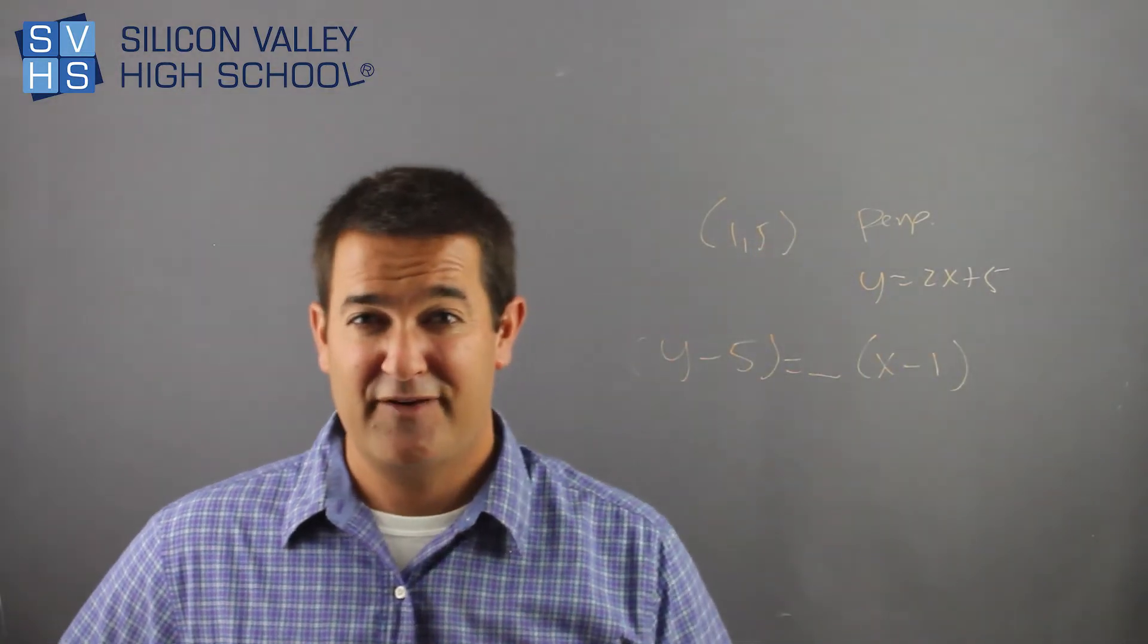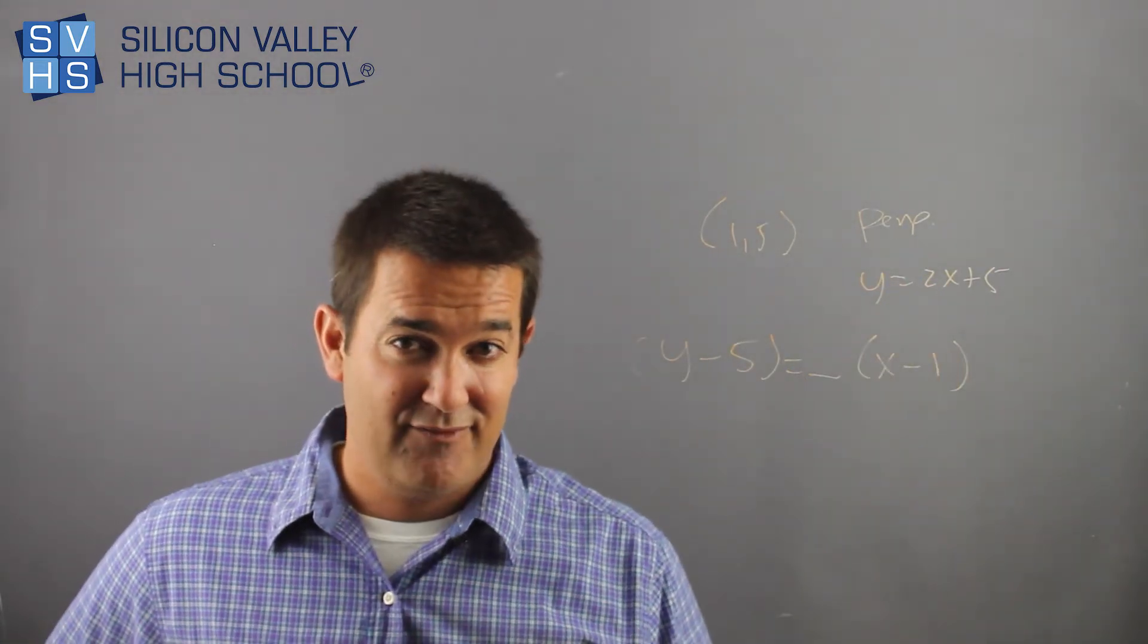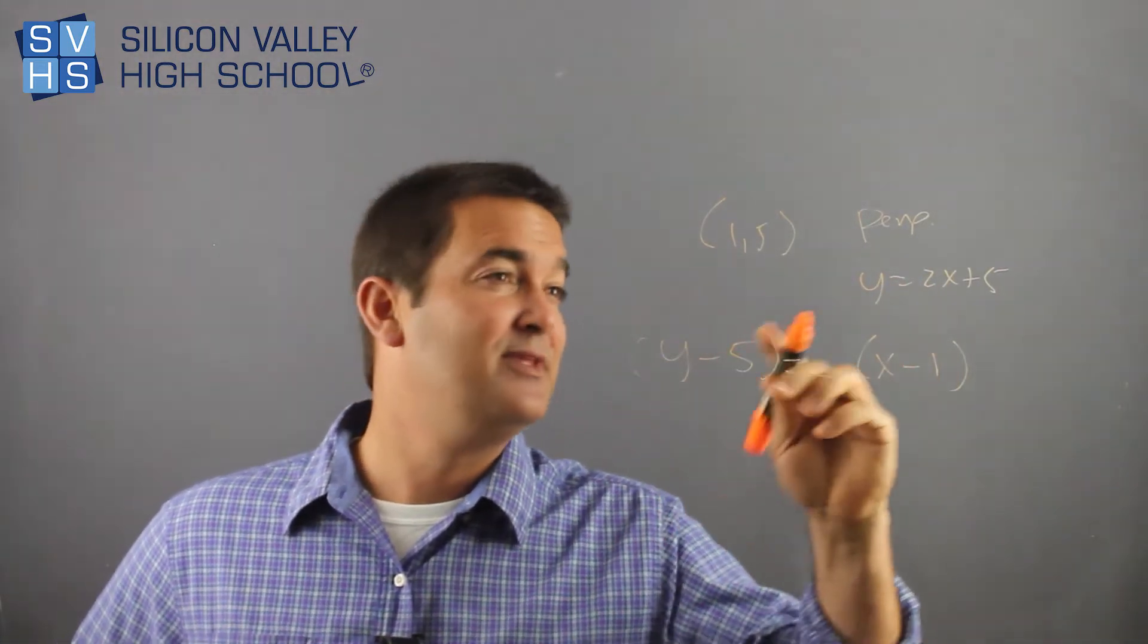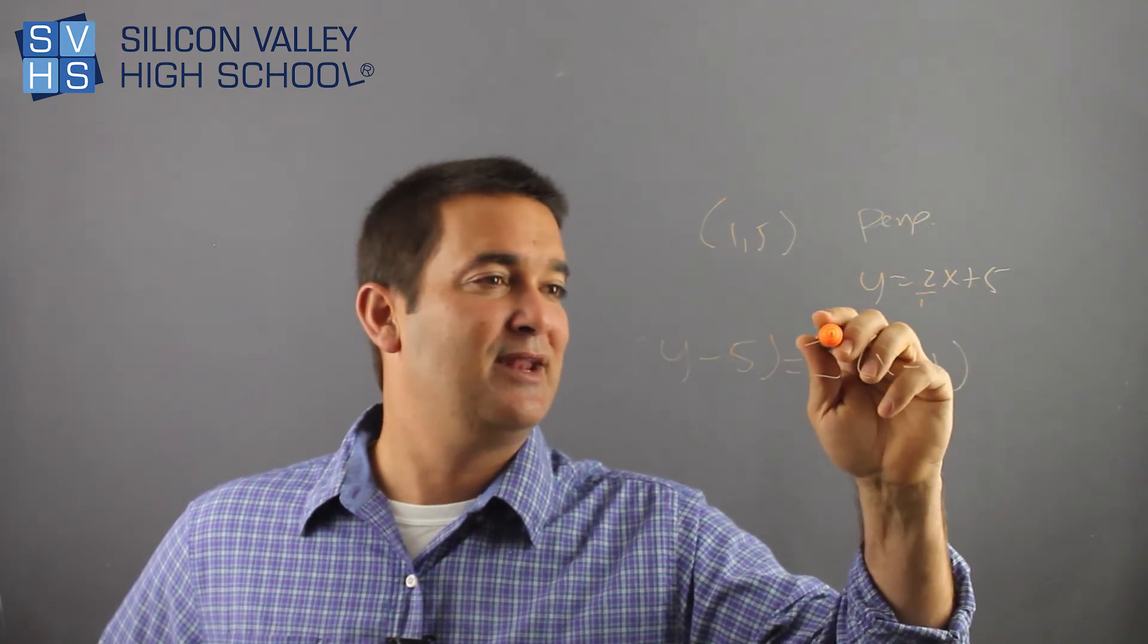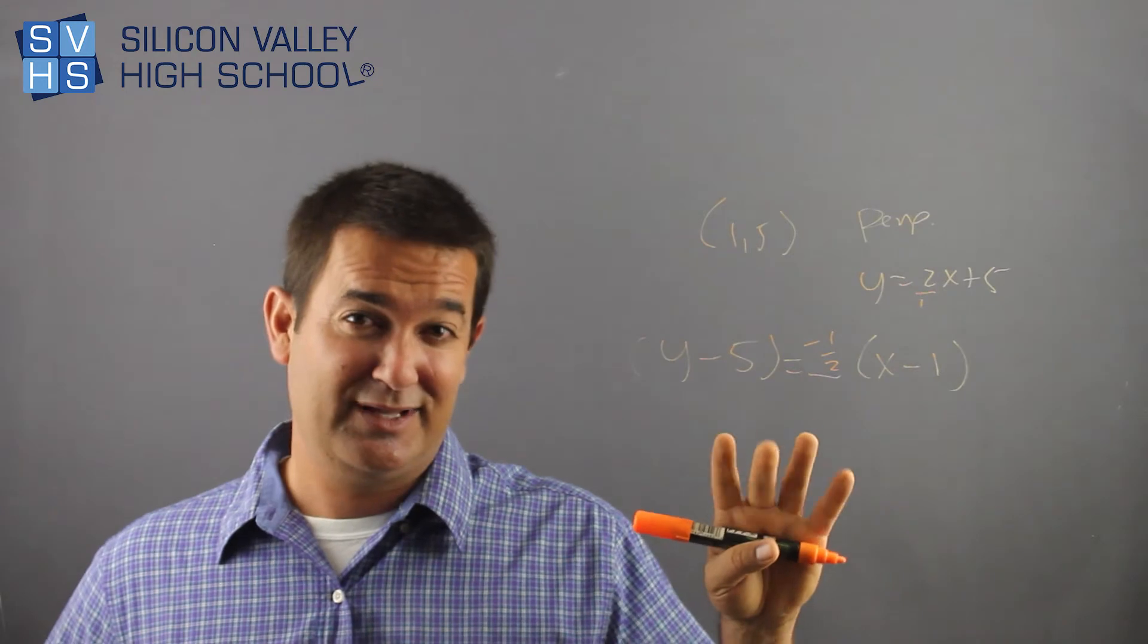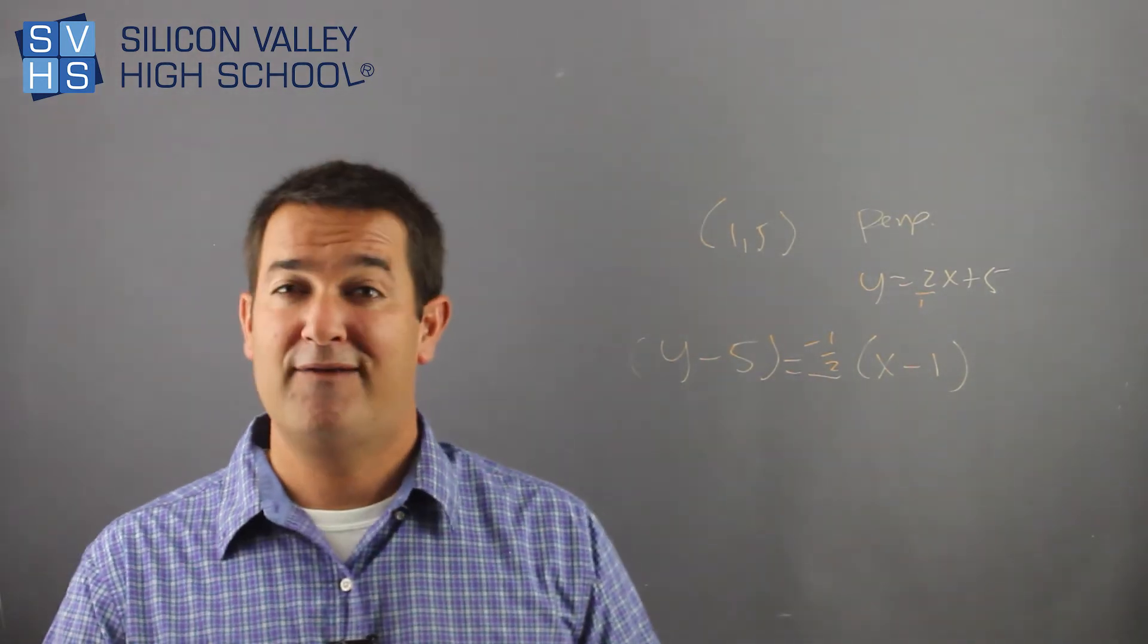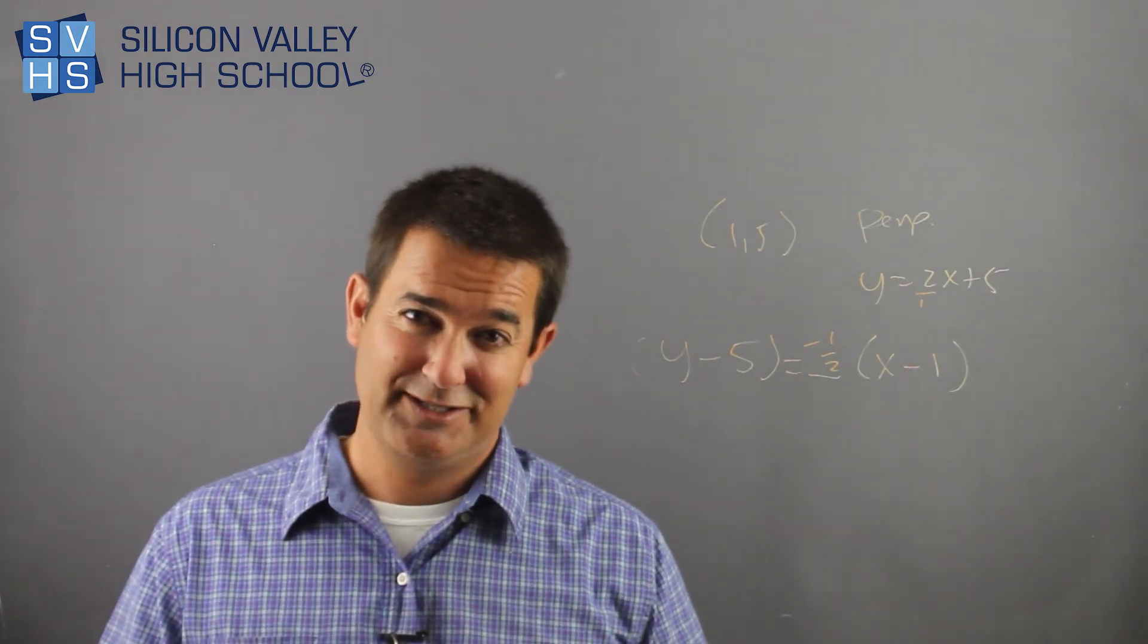y minus my y equals slope times x minus my x. And then what is my slope? Remember, if I'm perpendicular to this guy, my slope is the negative reciprocal to him. So if he's two over one, I'm negative one over two. That's my answer. Mess with it just like we did for the last few and get it in standard form. Get whatever form you like and then switch them.